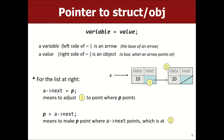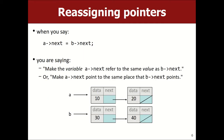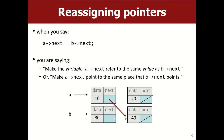Let's practice. Here's an example: if I have pointer `a` pointing to a ListNode, and I say `a->next = b->next`, that means make `a`'s next point to wherever `b`'s next points. So this next field gets redirected to point at the node that `b->next` was pointing at.